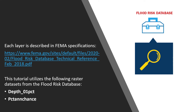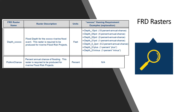The Depth 01% showing the 1% flood depth grid, and the Percent Annual Chance showing the percent annual chance grid. Here is a snapshot of what each FRD raster is and an explanation.